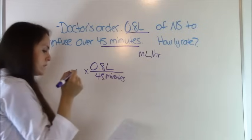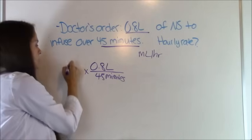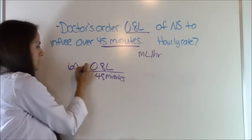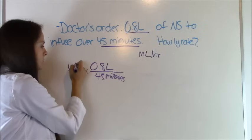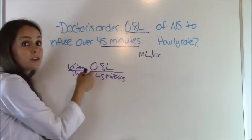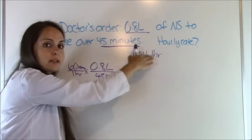So what we're going to do is we know that there are 60 minutes in one hour. So 60 minutes equals one hour. That cancels out minutes. Okay. So right now we're in liters per hour. Now we got to get that liters per hour to milliliters per hour because that's what we're trying to get.